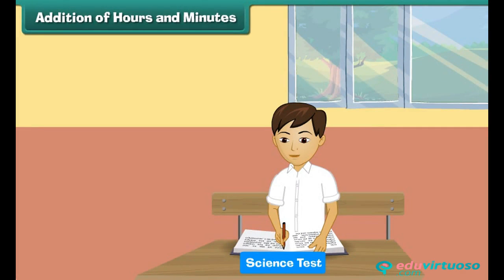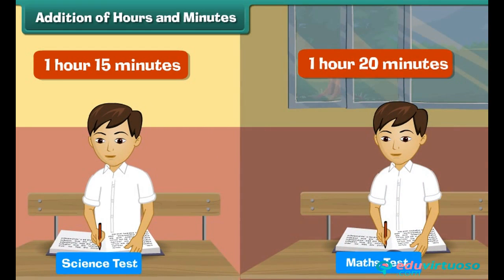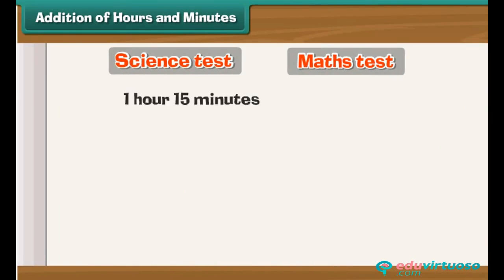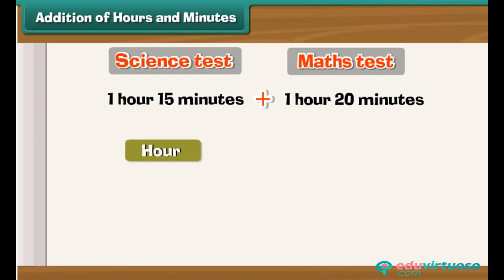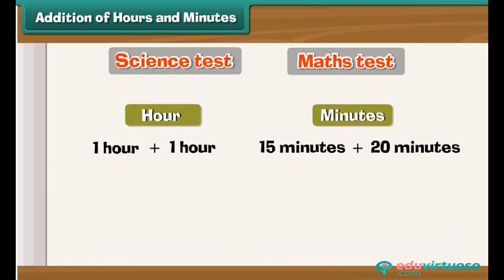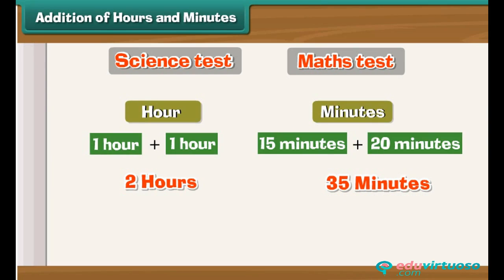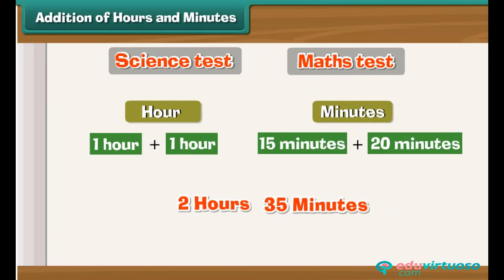Addition of hours and minutes. Let us learn to add two times. Raju completes his science test in 1 hour 15 minutes and his maths test in 1 hour 20 minutes. To find the total time, we add the hours together and the minutes together. Adding the hours gives 2 (1 plus 1), and adding the minutes gives 35 (15 plus 20). So the total time taken by Raju to write the two tests is 2 hours 35 minutes.